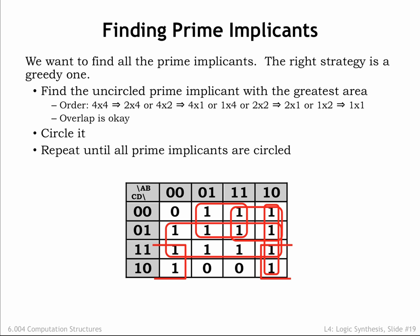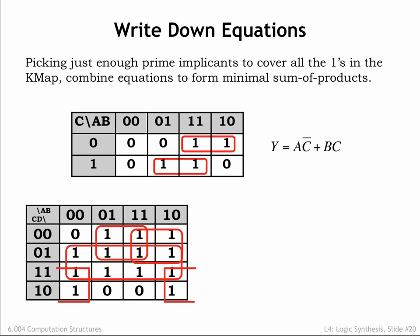Now that we've identified the prime implicants, we're ready to build the minimal sum-of-products expression. Here are two example K-maps where we've shown only the prime implicants needed to cover all the 1s in the map.